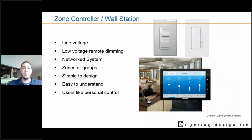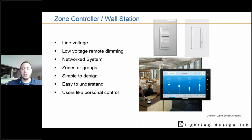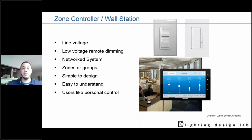Zone controller wall stations are wall controls that typically control one zone — one group of fixtures that won't be subdivided further. Zone controllers are great for personal or individual control, though they may raise issues in open offices since open offices usually have more than one zone. If you start shifting levels, you could bother other occupants who don't want their levels changed. Users can typically dim up and down with dedicated raise and lower buttons or sliders. The more control users have, the less likely they'll keep lights at the brightest level — they'll find it too glary.